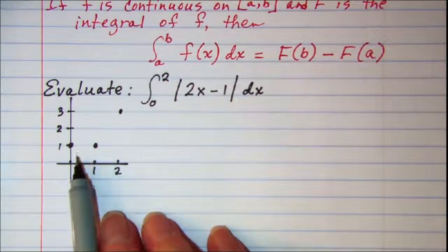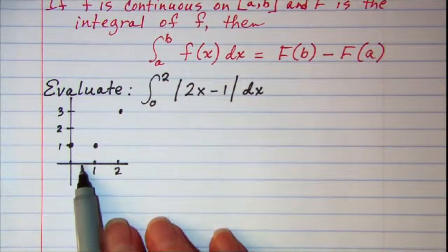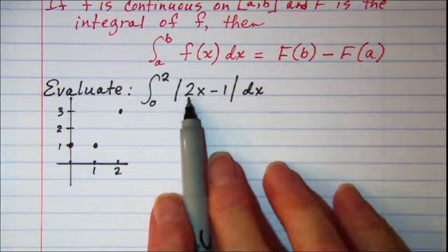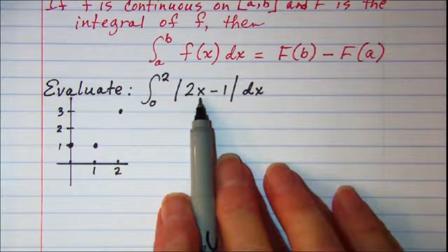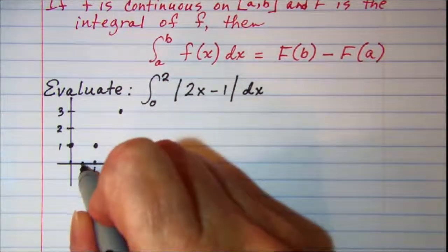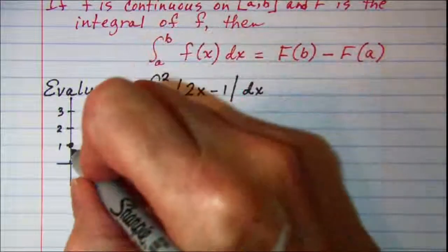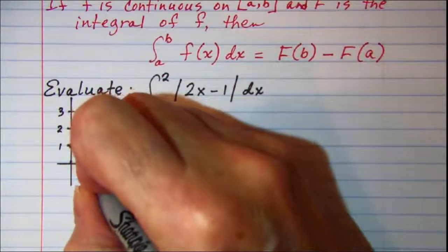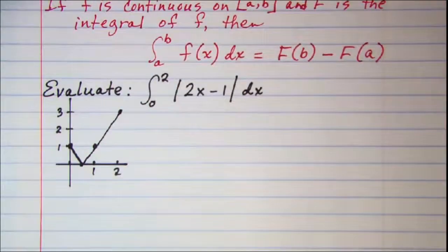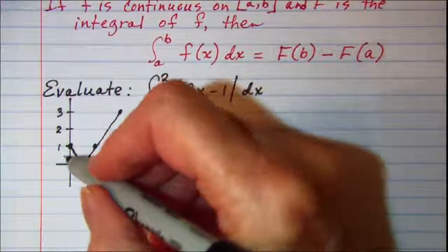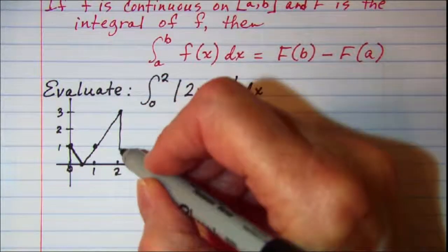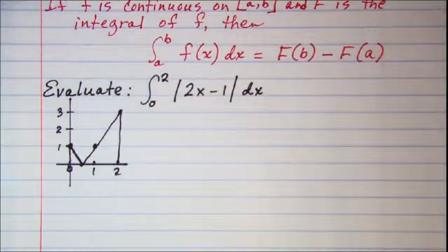Now it looks like our absolute value function is going to hit the axis at 1/2. So if we check that: 2 times 1/2 is 1 minus 1 is 0, so at 1/2 our function hits the axis. So our graph looks like this, and we're evaluating from 0 to 2.